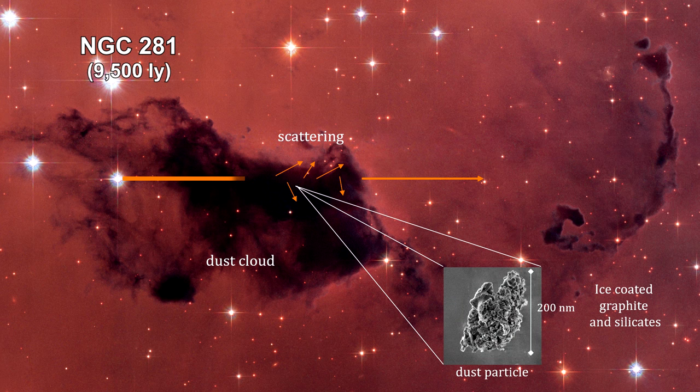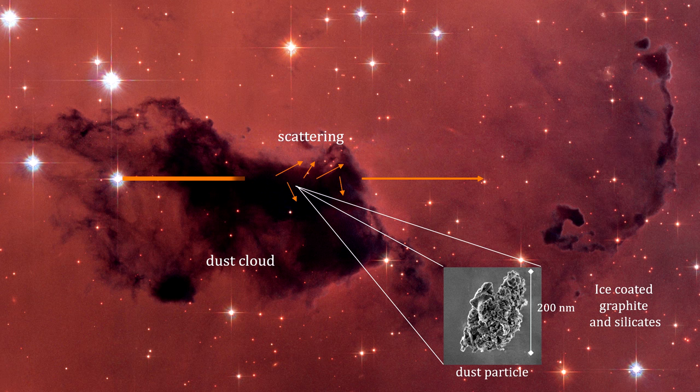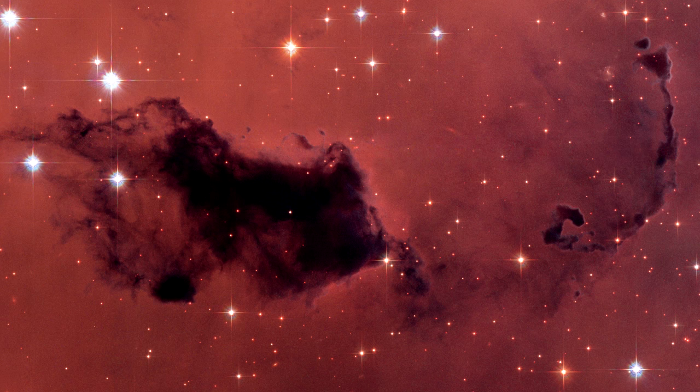But gas clouds radiate radio waves, and radio waves pass through dust particles untouched because their wavelength is much larger than the size of these particles. We can see these clouds all across the galaxy, including the hidden area behind the central bulge.